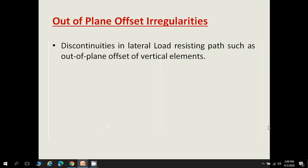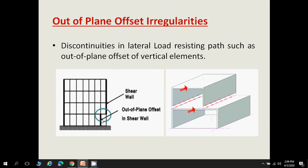Out-of-plane offset means a discontinuity in the lateral load resisting path, such as an out-of-plane offset of a vertical element. In the first story the shear wall is at one location, and in the story above it the shear wall is at a different location. When the building is subjected to seismic force, the load resisting capacity of these stories differs because the vertical members are not lying in the same plane. This is called out-of-plane offset irregularity and such buildings should be avoided.